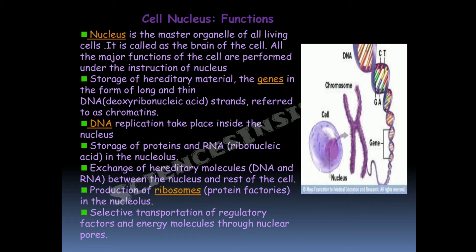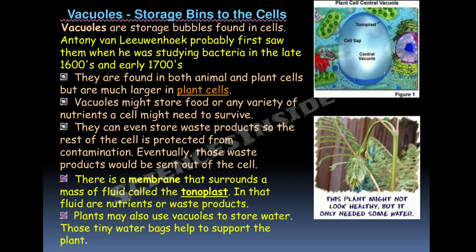Vacuoles are the storage bins of the cell — storage bubbles found in the cell, first likely seen by Leeuwenhoek when he was studying bacteria. They are found in both animal and plant cells but are much larger in plant cells because plants store their food there. Vacuoles store food, nutrients, or waste products, protecting the rest of the cell from contamination. A membrane called the tonoplast surrounds the vacuole fluid. Plants also use vacuoles to store water, and these tiny water bags help support the plant.